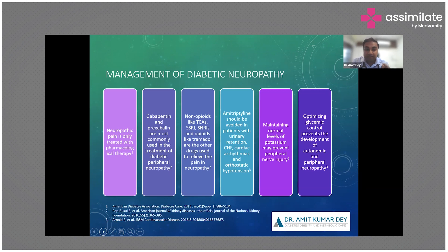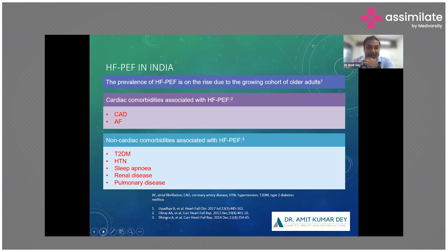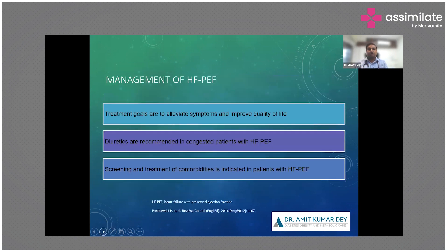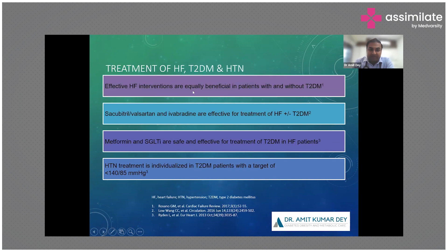Heart failure is very prevalent and coexists with coronary artery disease. The non-cardiac comorbidities most associated with heart failure with preserved ejection fraction (HFpEF) are diabetes, hypertension, sleep apnea, renal disease, and pulmonary disease. In daily practice it is important to assess patients for HFpEF. Treatment goals are to alleviate symptoms and improve quality of life; diuretics are the treatment of choice for congested patients, and screening and treatment of comorbidities is indicated in HFpEF.